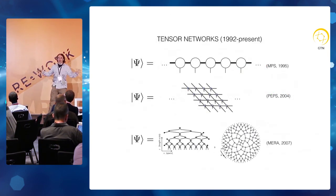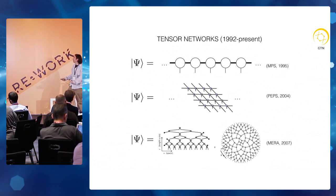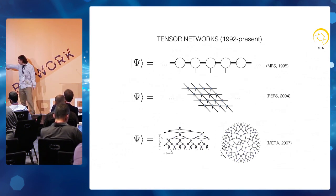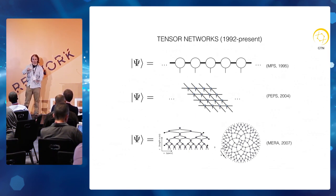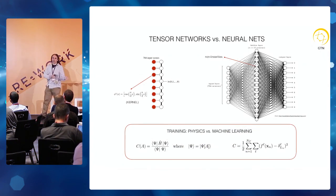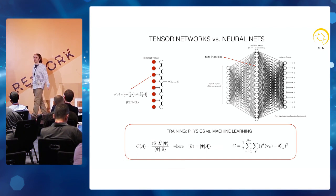Physicists have been working on constructing these kinds of tensor networks for the past 30 to 35 years and have come up with various networks for various physical situations. One of them is reminiscent of a convolutional neural network in the sense that it looks at features on different scales — it's designed for scale-invariant systems. Over the past year and a half, people have realized that these two approaches are really the same in some sense.